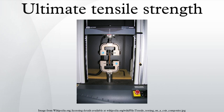Testing: typically, the testing involves taking a small sample with a fixed cross-section area, and then pulling it with a tensometer, gradually increasing force until the sample breaks. When testing metals, indentation hardness correlates linearly with tensile strength. This important relation permits economically important non-destructive testing of bulk metal deliveries with lightweight, even portable equipment, such as handheld Rockwell hardness testers.